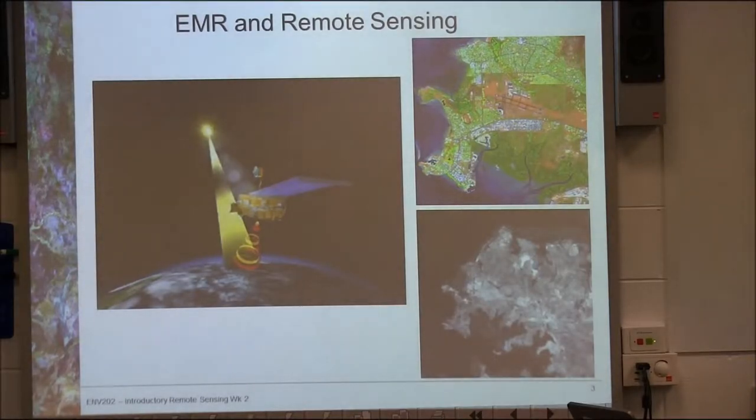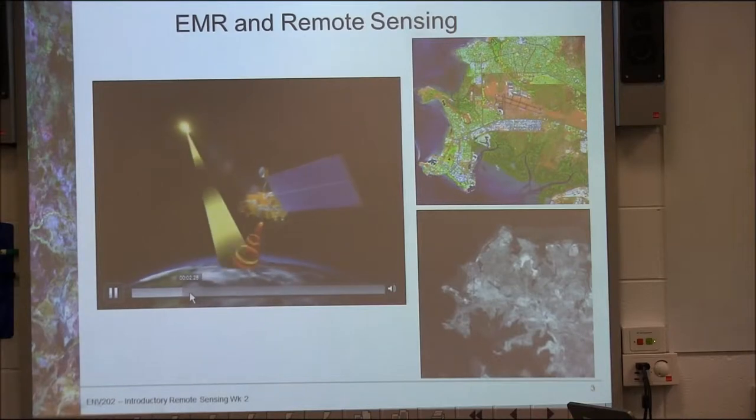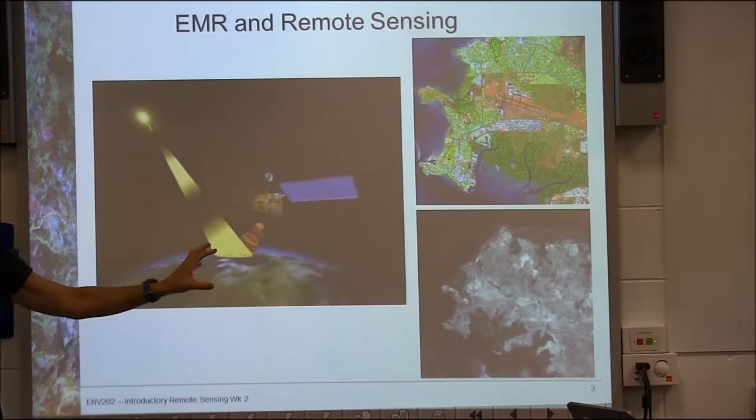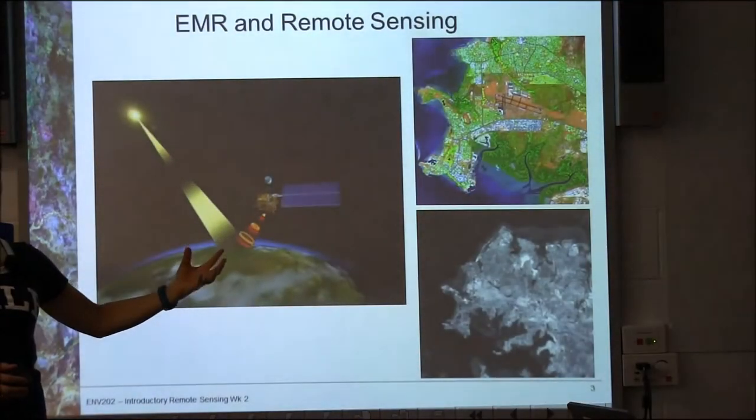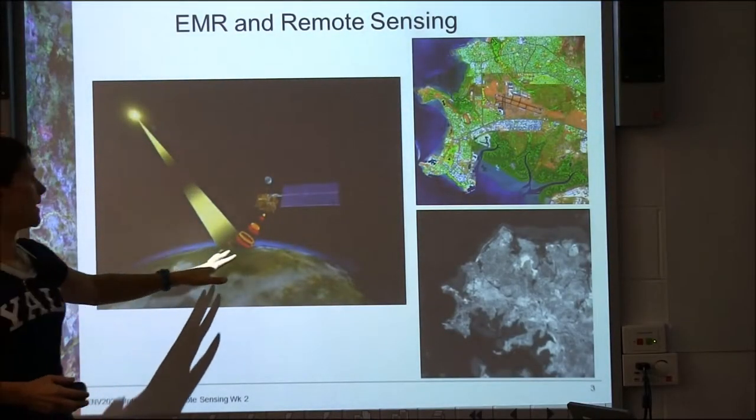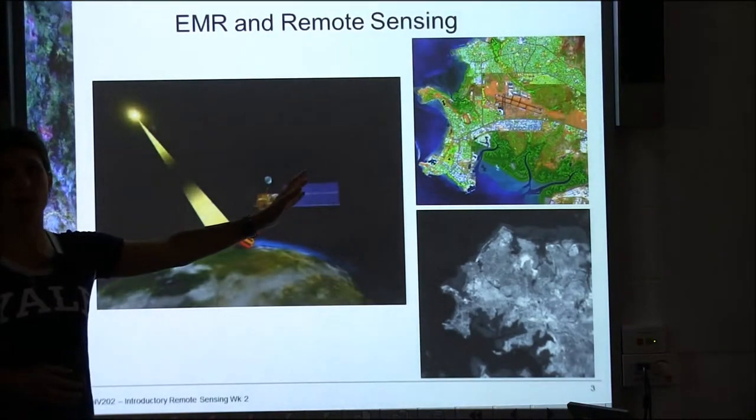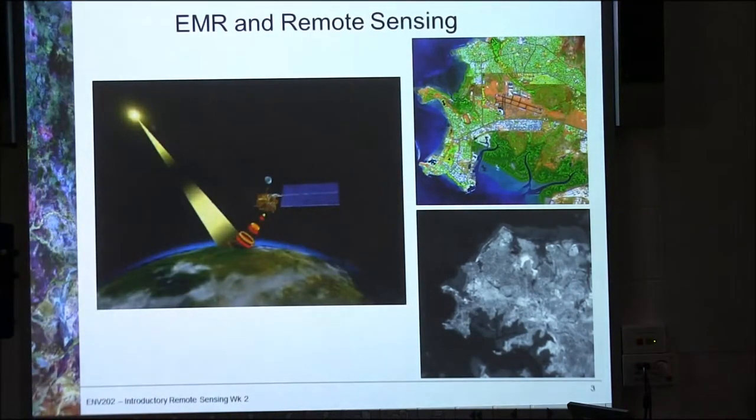What I'd like to talk about first is just how remote sensing actually works. I've got a nice animation here which is basically just giving us the indication that sunlight comes in, it interacts in some way with the surface of the earth, the atmosphere, the water, and then goes back up to a satellite or sensor for it to obtain that information. What you see on your right hand side of the screen there are two Landsat images.